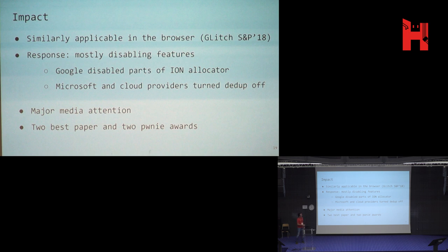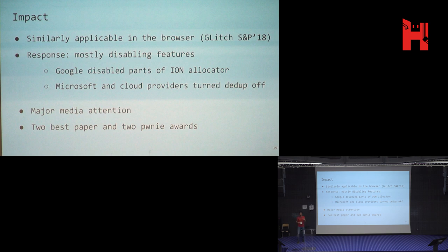Most of the time, the response we get is that they'll disable the feature we used to make the exploit work — what we call a spot mitigation. For example, Google disabled part of the allocator we used to get DMA memory, but couldn't disable all of it because many phone applications wouldn't work. Microsoft and cloud providers decided to turn memory deduplication off because it allows these types of attacks. Also, every now and then a reporter would call and ask what we did, and you suddenly have to explain these things in language that people understand — an interesting experience. We also received a Pwnie award — a silly award given at the Black Hat conference.